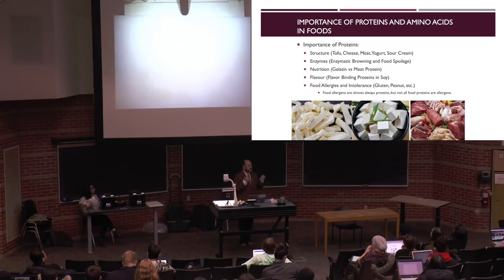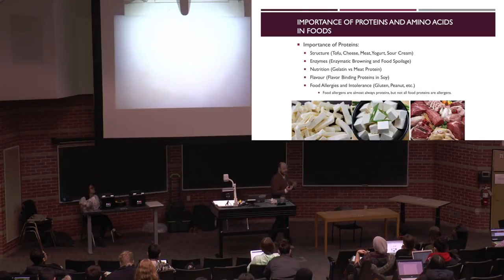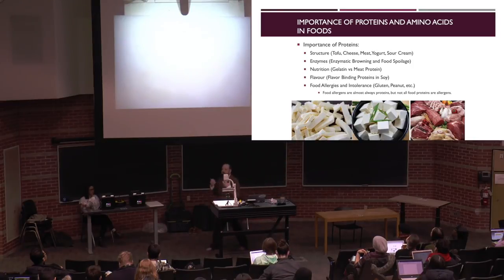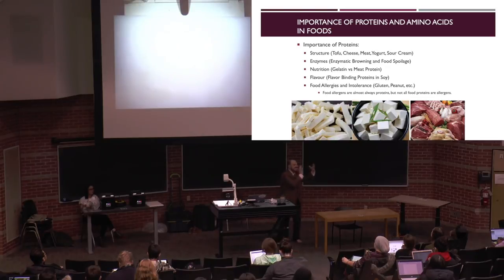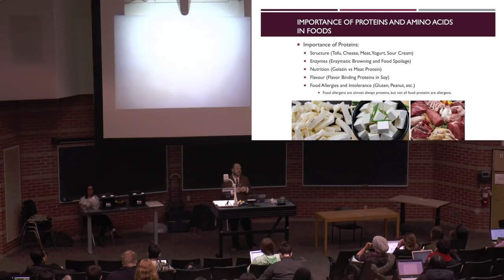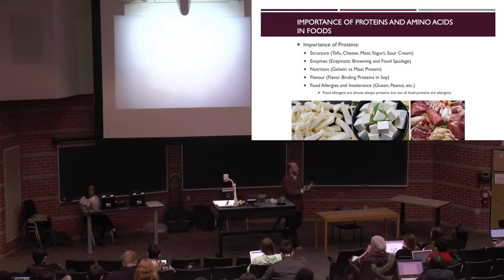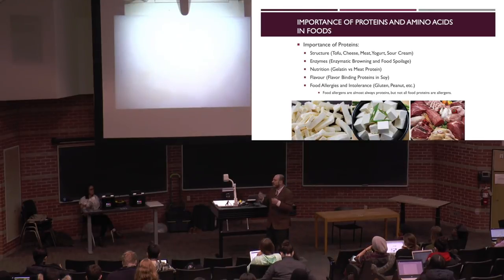The first role we talk about the most is structure. We can think of egg-based products, tofu, meat, cheese, sour cream, and yogurt — the structure of all those foods is dependent on the type of protein and how we get that protein to set, or go from its native to its denatured configuration. Proteins are also important as enzymes, from a nutritional standpoint, and regarding limiting amino acids.